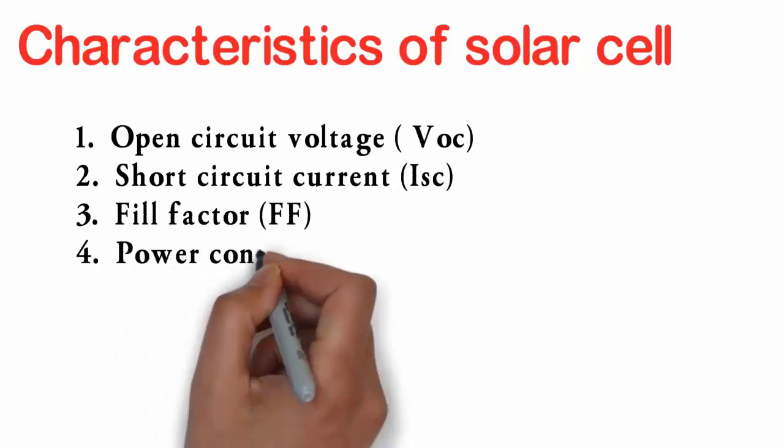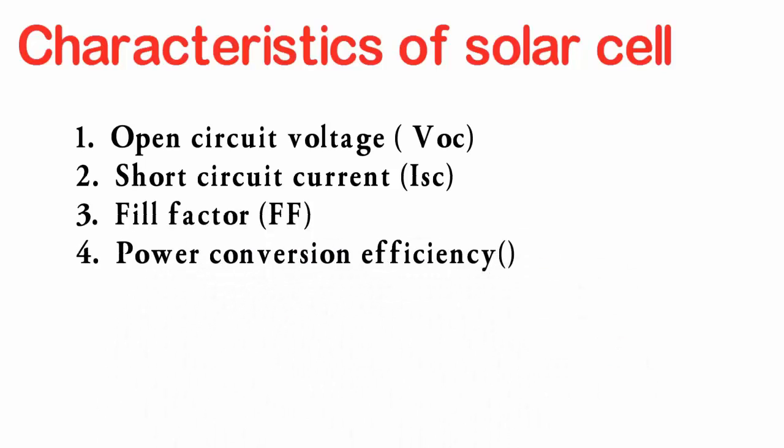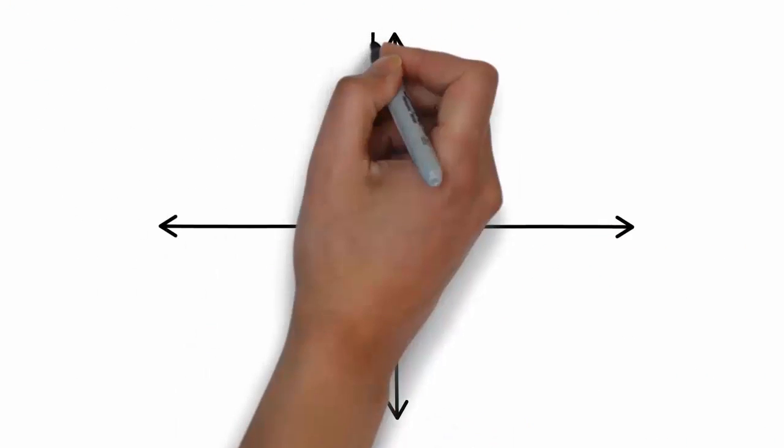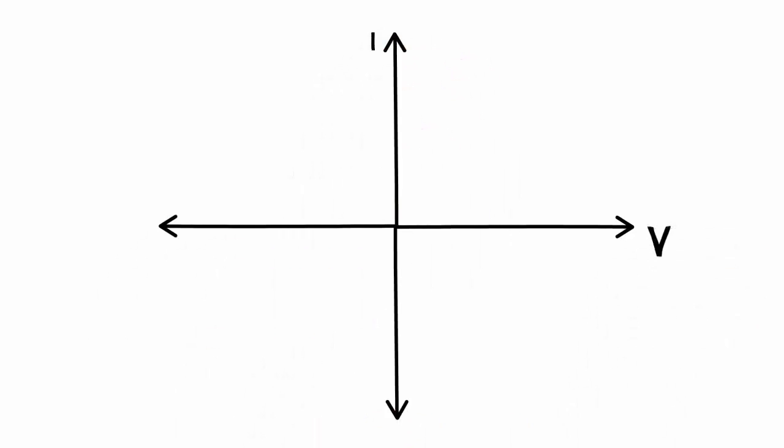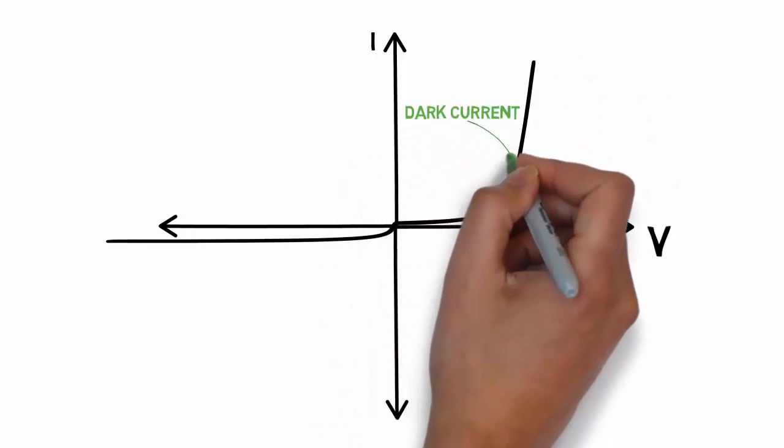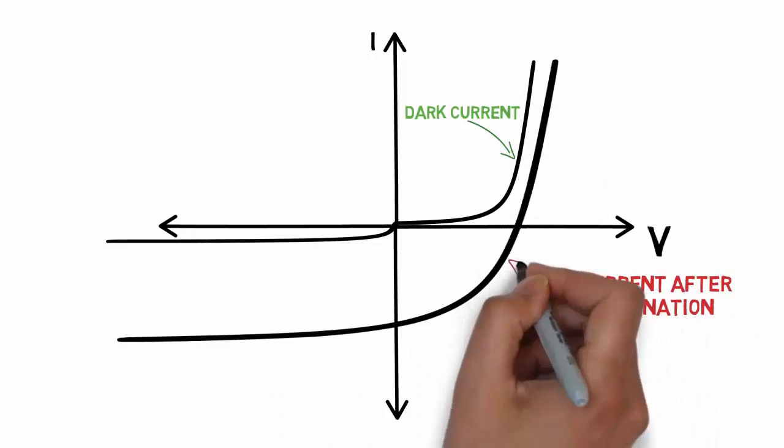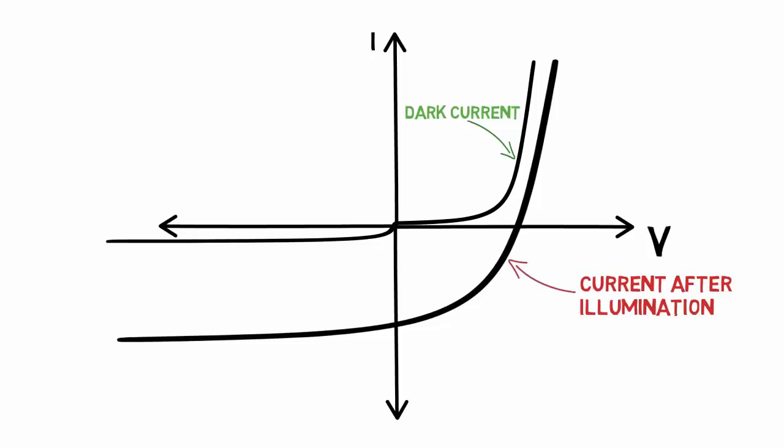Now let's take a look at the VI characteristics of solar cell. Whenever there is not sufficient light, solar cell will work as a normal diode. The current flowing at this time is called dark current. As soon as we focus sunlight on it, a large number of carriers gets generated and they increase the magnitude of current by a large amount. This increased value of current flows through load.